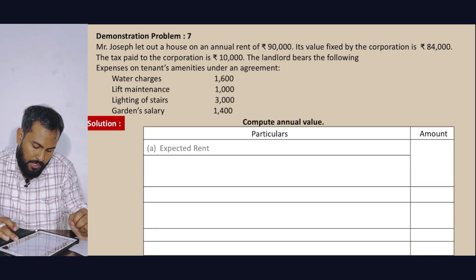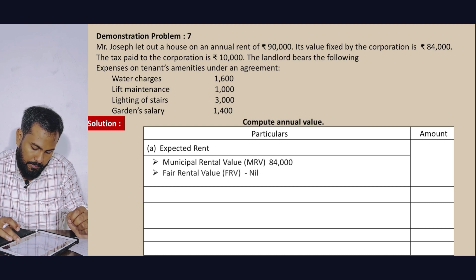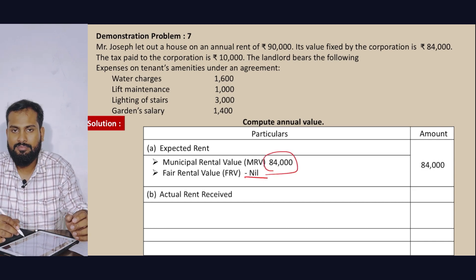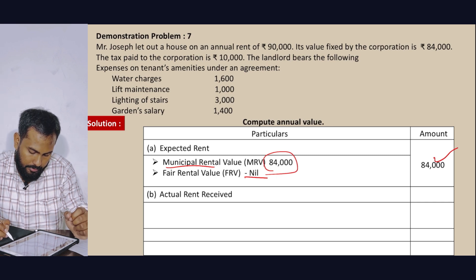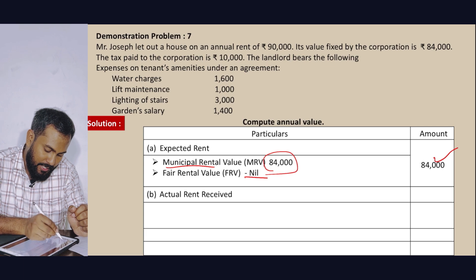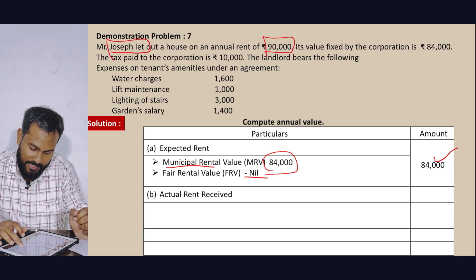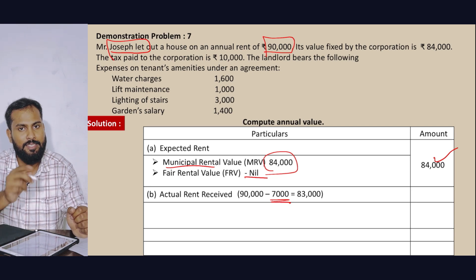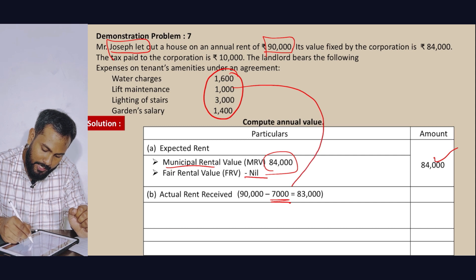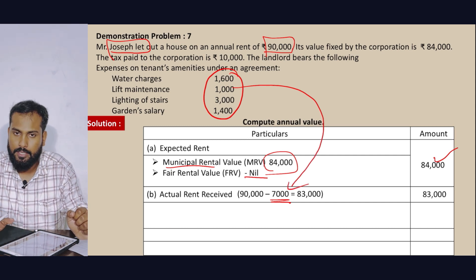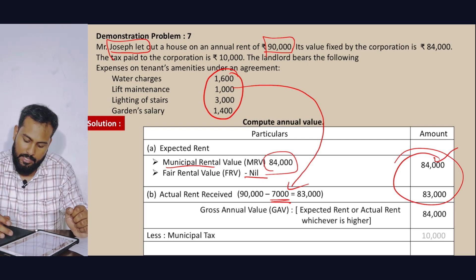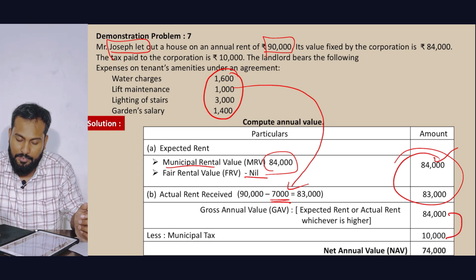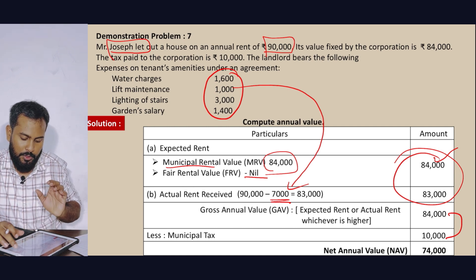Computation of Annual Value for Joseph: Municipal Rental Value is 84,000, Fair Rental Value and Standard Rental Value are similar. Actual rental: Joseph receives 7,000 per month plus 8,000 for amenities = 83,000 to 84,000 total. Less Municipal Tax of 10,000: 84,000 − 10,000 = 74,000 Net Annual Value.